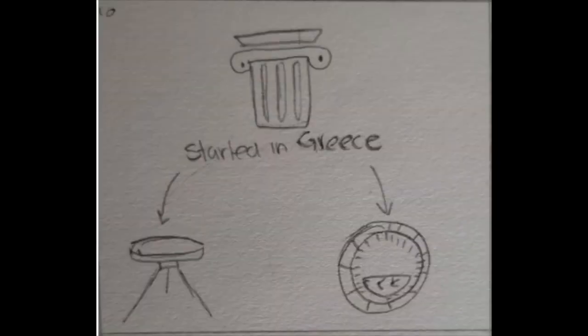Astrolabes first began in Greece, and it was a combination of two existing instruments into one functioning system. The first of these instruments, called the dioptera, and the second one, called the plane sphere projection.